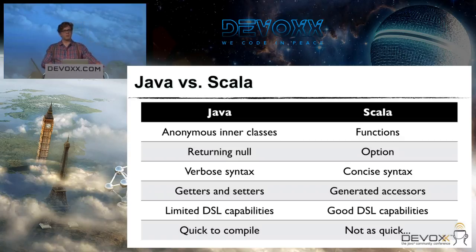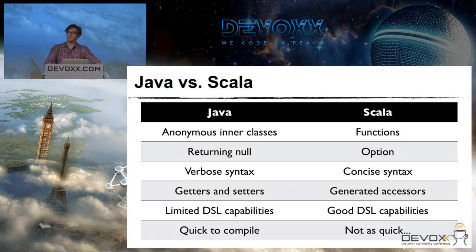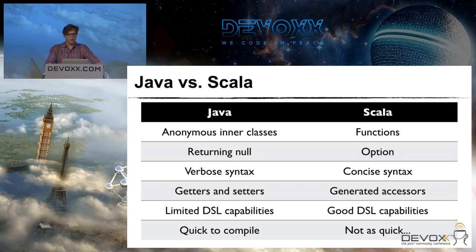Comparing Scala to Java specifically for this talk — because we're talking about using a Java framework, Spring, in Scala — a couple of things to focus on: In Java we use anonymous inner classes for things like templates and callbacks. In Scala we have functions for that. In Java you typically return null if you have no return value, but in Scala you have the option of returning an Option — either something or nothing. Scala is quite concise; you can write a class in as little as one line. You get getter and setter generation, and good capabilities for creating DSLs because the language is so flexible.